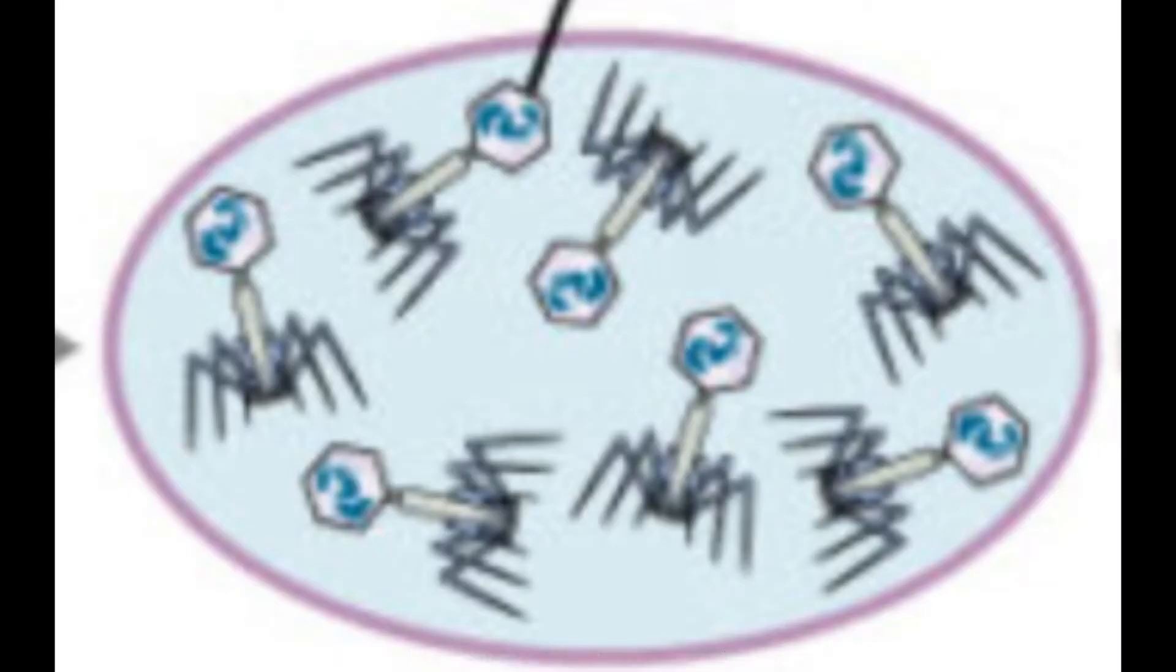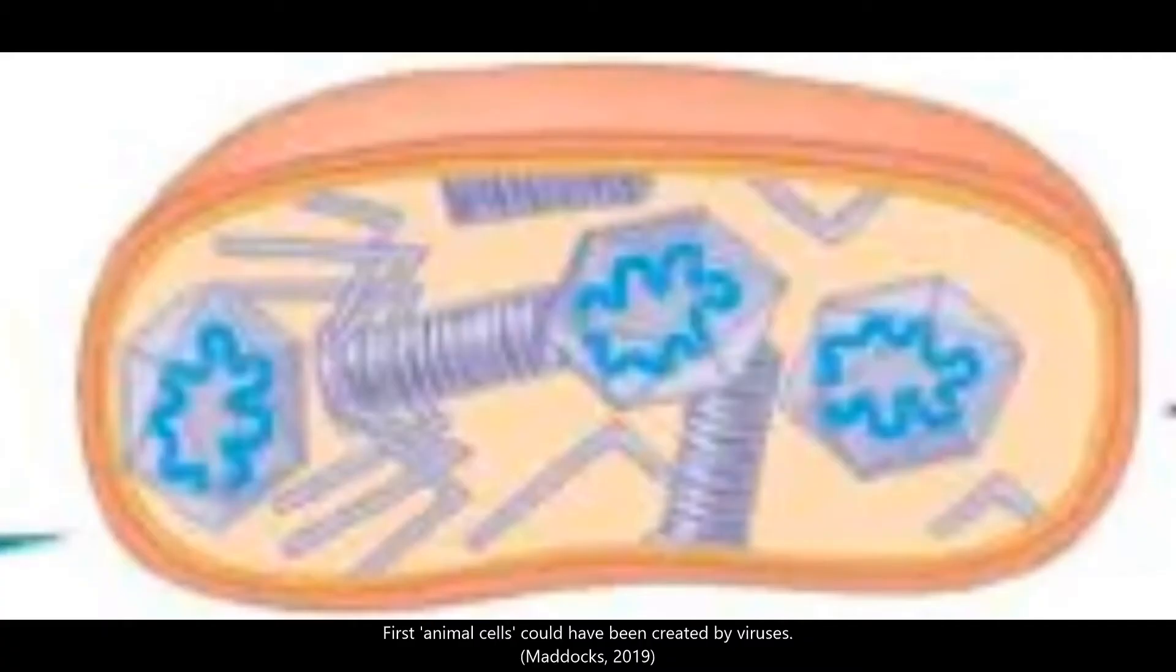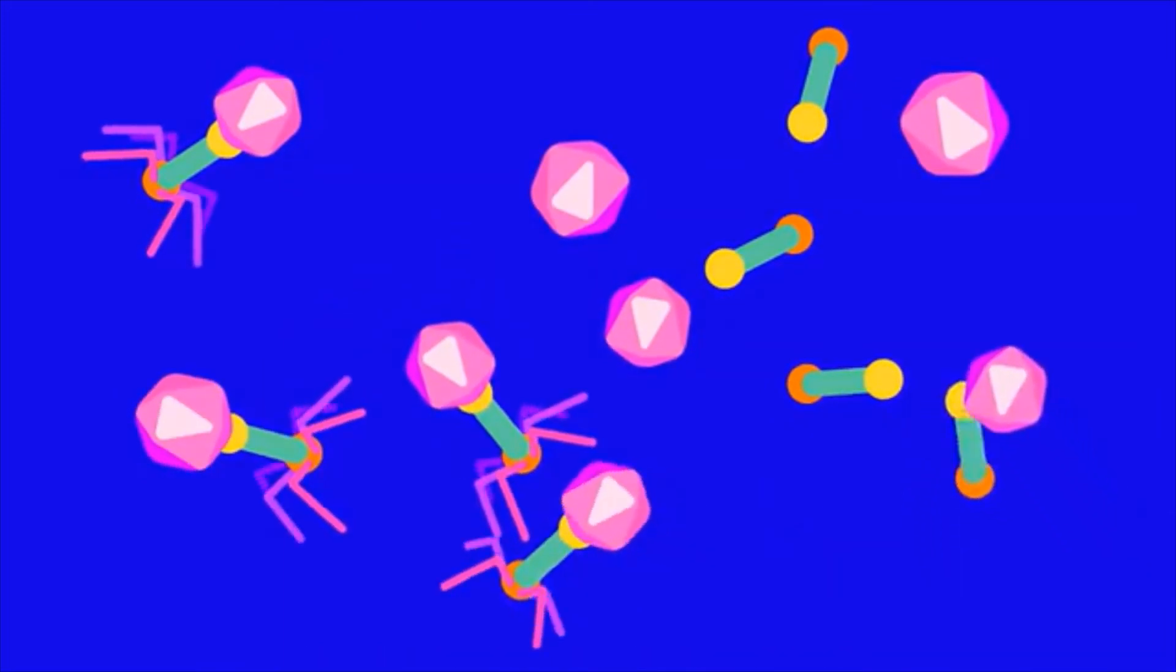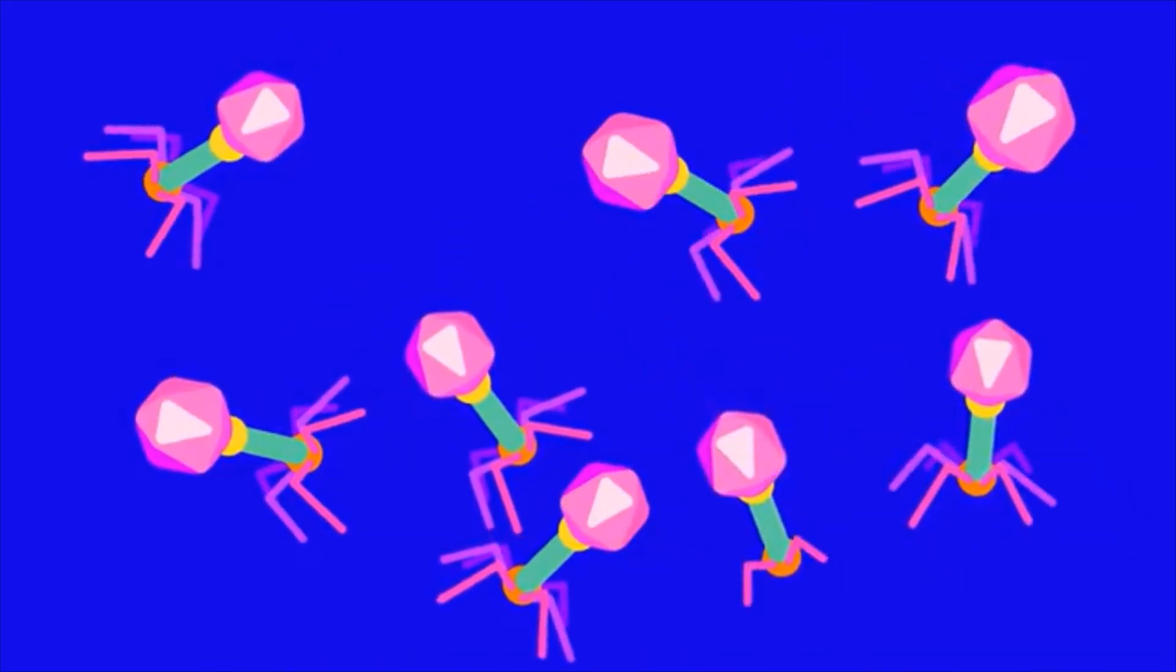The virus then moves on to the fourth stage called assembly. In this stage, the virus's nucleic acid becomes coated in the viral protein called capsid and new viral bodies are formed inside of the host cell.